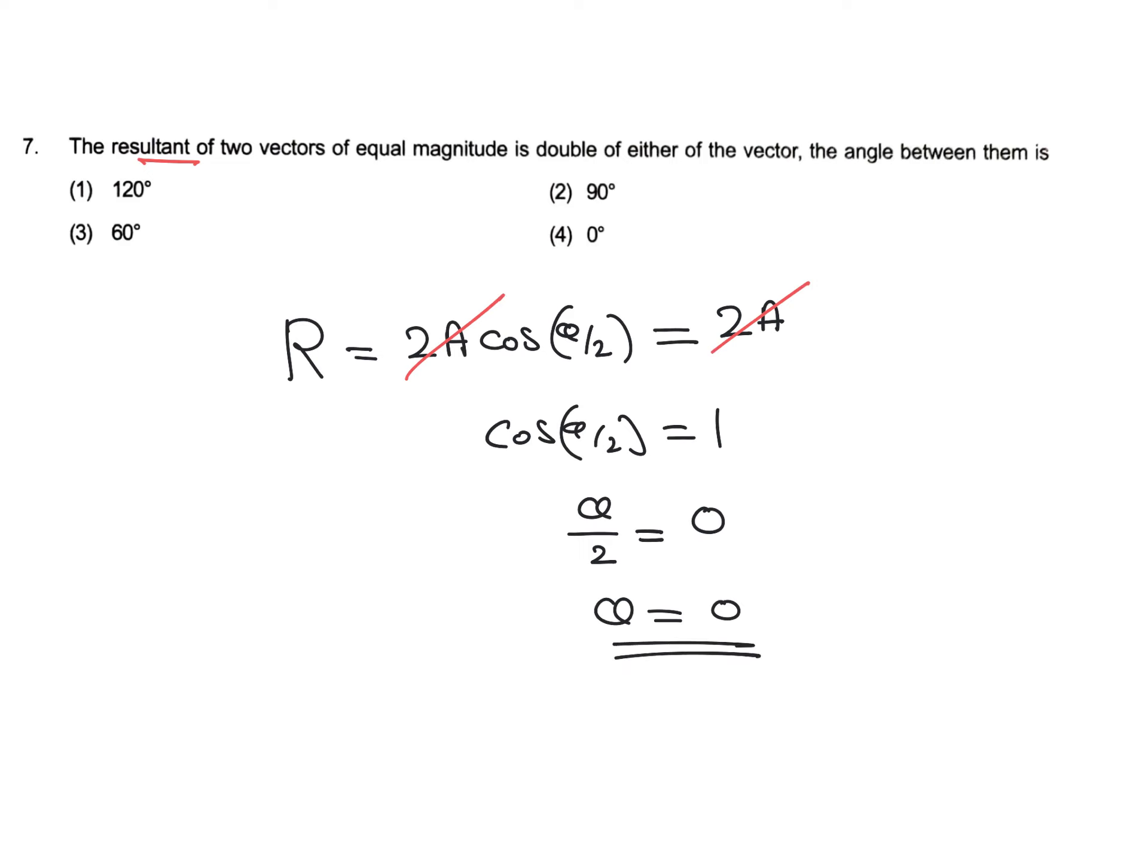We know that when two vectors of same magnitude have an angle of 0 between them, the resultant will be equal to 2a.